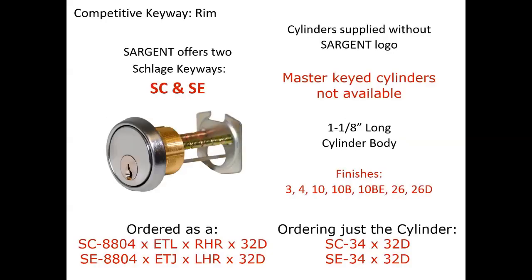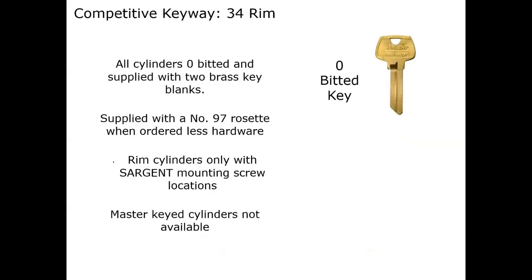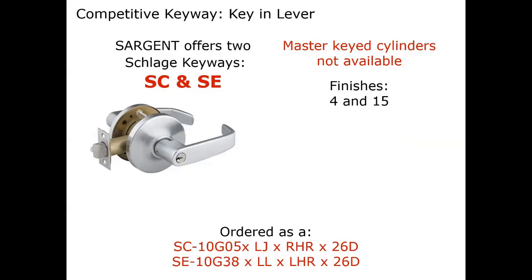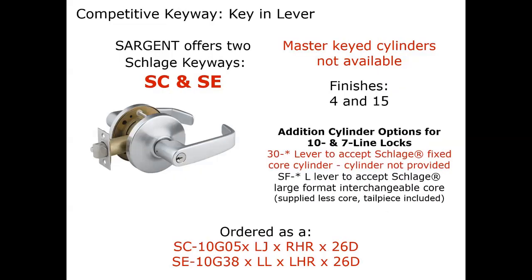Our next slide shows our rim cylinder, also offered in the Schlage C and E keyways — zero bitting, offered with most of our products or by themselves as an SC-34. Supplied with the number 97 collar standard. We offer the same two keyways with our board lock products, whether it be a 10 line or 7 line, with the same prefixes SC (Sam Charlie) or SE (Sam Echo), for field keying.